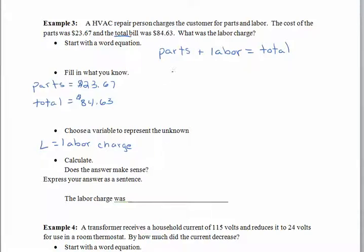And what we don't know is the labor. So how about capital L for labor? Don't use a small letter L because then it will look like a 1. Okay, so let's see. Parts. $23.67. We put that right where parts is in our equation. Plus labor L is equal to the total $84.63. And so we put everything in the equation where it belongs. Once the word equation is written, we are almost home free.